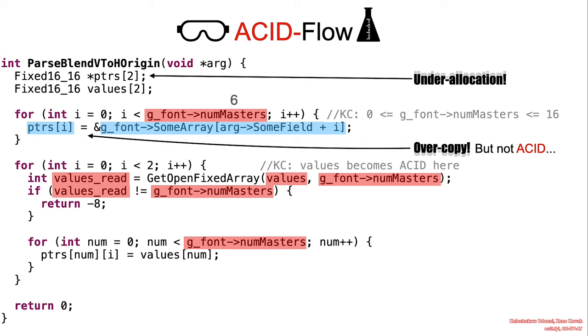At the end of the first few statements, the values array now contains elements from g_font.